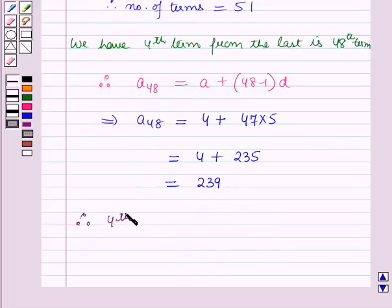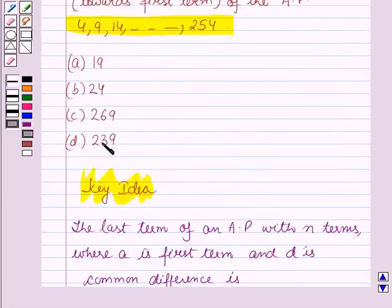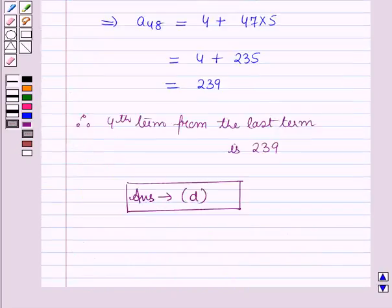Therefore, the 4th term from the last term towards the first term is 239. The answer of this question is option D, that is 239. So this is the solution of the given question and that's all for this session. Hope you all have enjoyed the session.